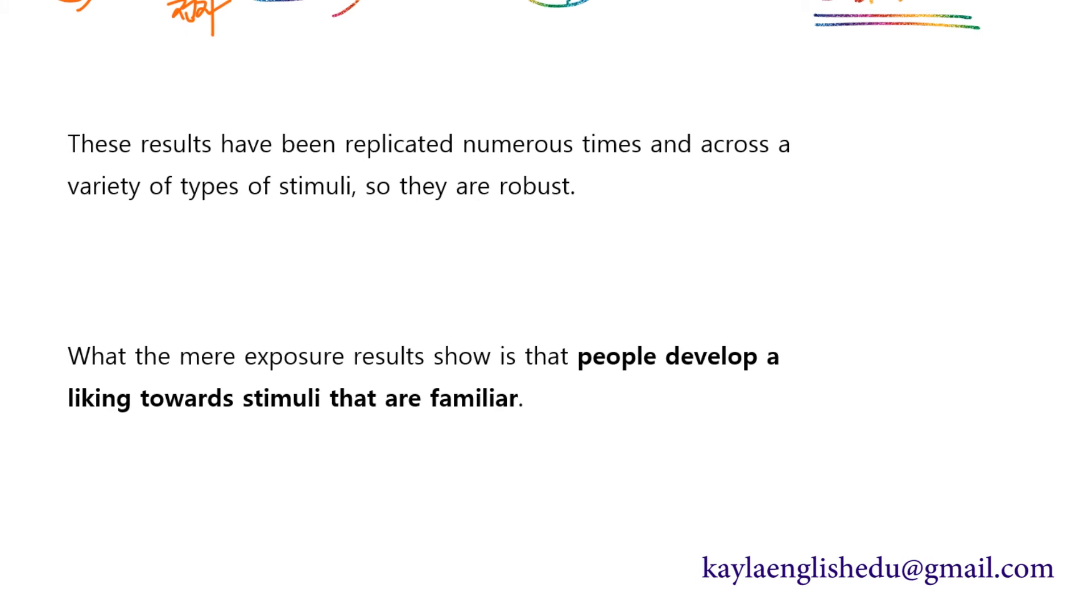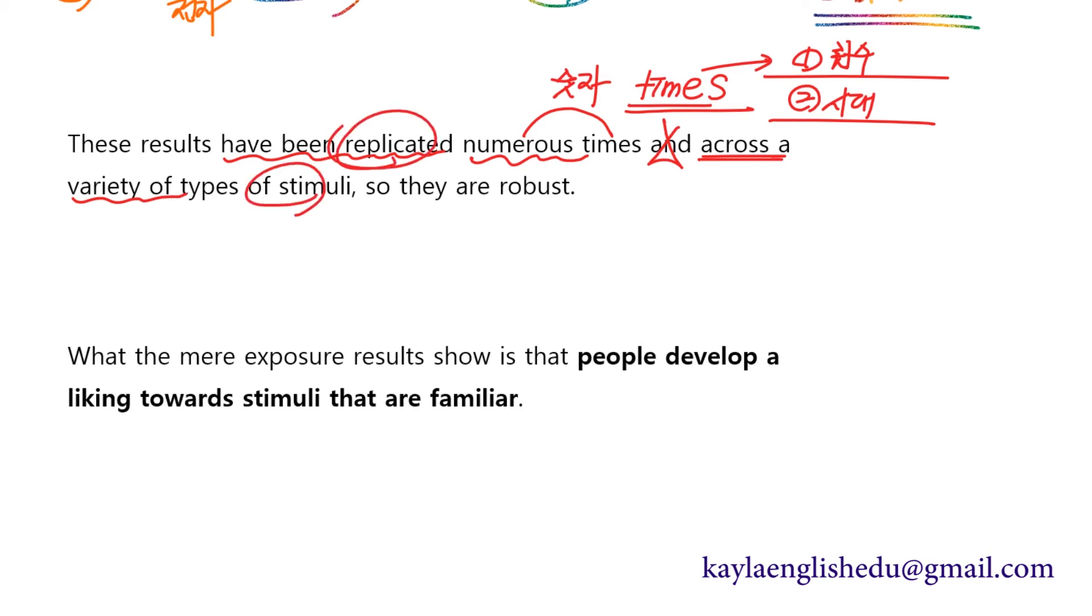these results have been replicated numerous times and across a variety of types of stimuli so they are robust. 이 결과들은 복제됐어요. 수많은 횟수에 time은 time에 시간이라는 의미로 쓰일 때는 그냥 time이거든요. 셀 수 없는 명사니까 그런데 time에 s가 붙어있는 거는 여기 앞에 이제 숫자가 보통 들어가는데 이거는 두 가지 의미예요. 1번 몇 번이냐 하는 횟수 two times 2번 three times numerous times 그러면 수번 그러니까 여러 번. across, 다양한 종류의 자극에 걸쳐서 수번 여러 번 replicated 됐어요. 복제됐어요.